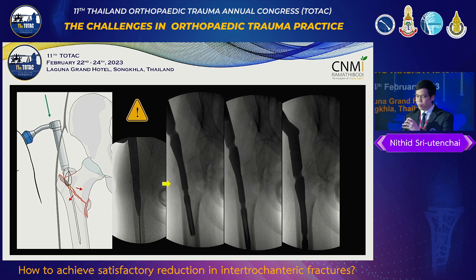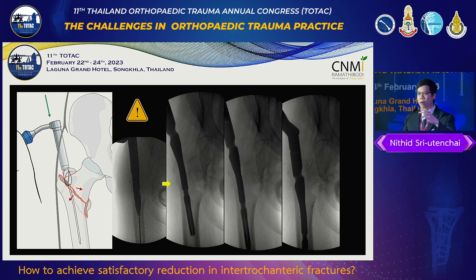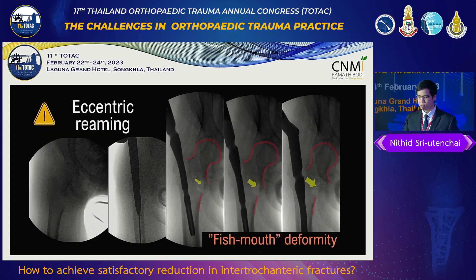The medial bone tends to remain intact after proximal reaming. When you insert the nail, the proximal fragment gets translated medially — as if the nail kicks the fragment — producing what is called a fish mouth deformity.